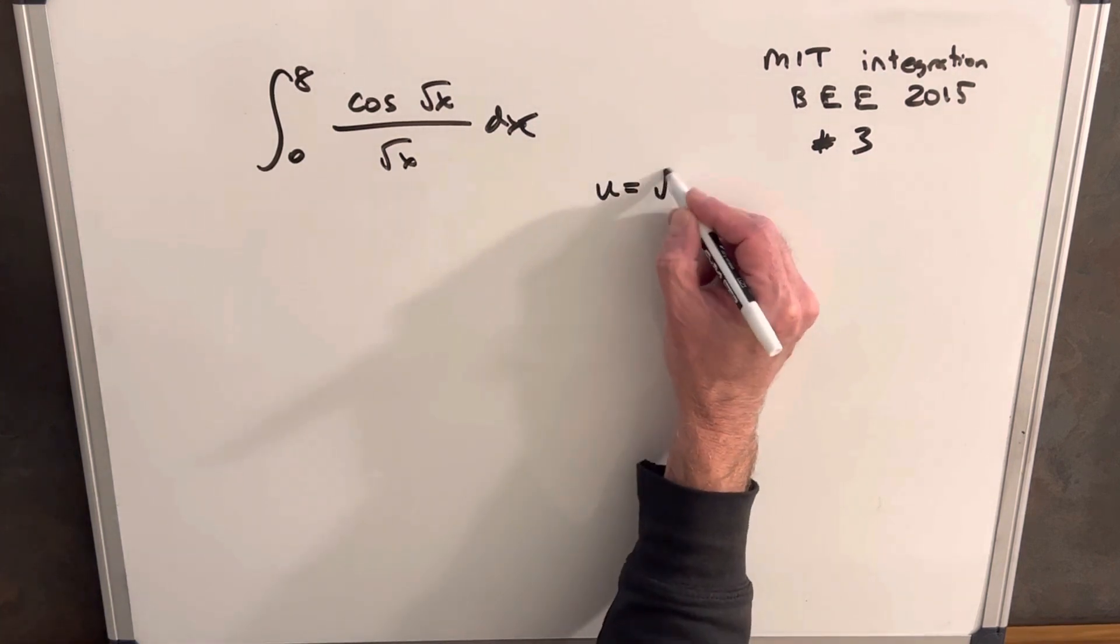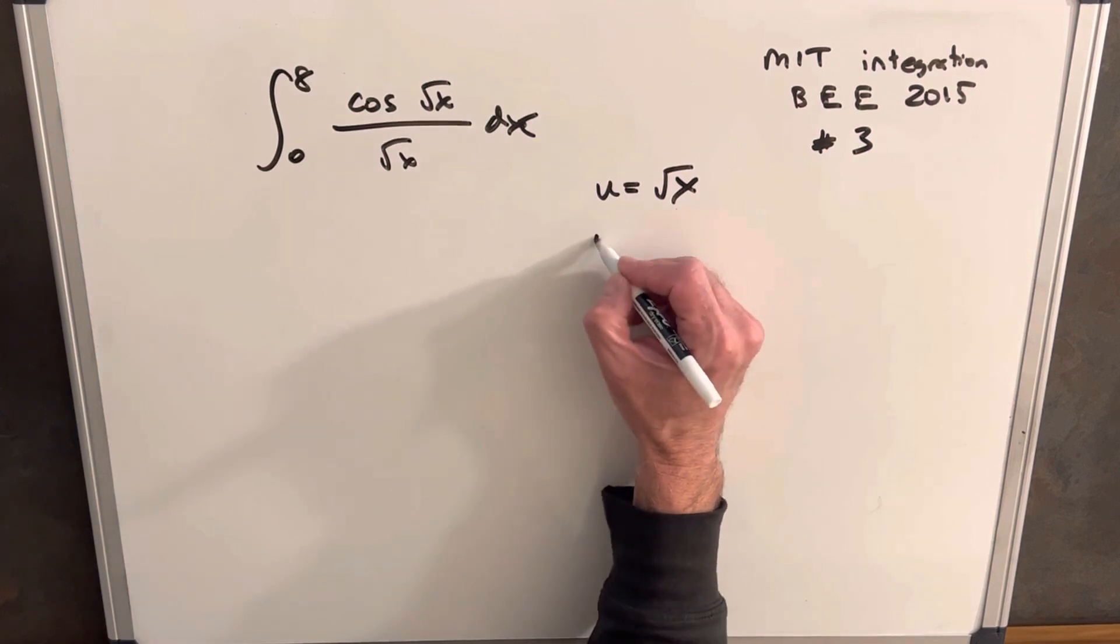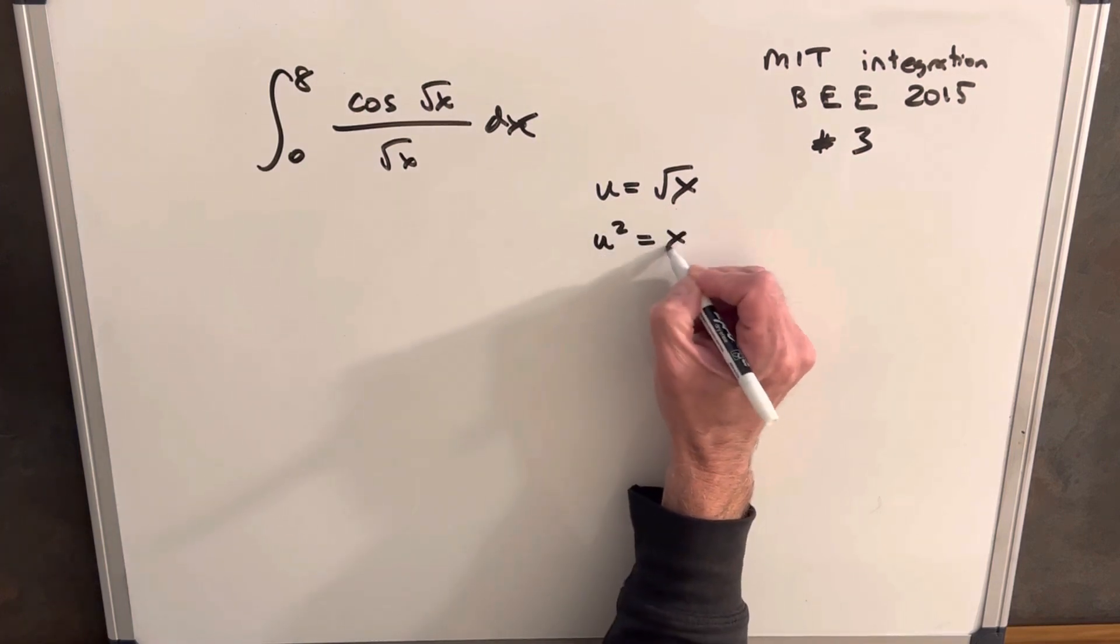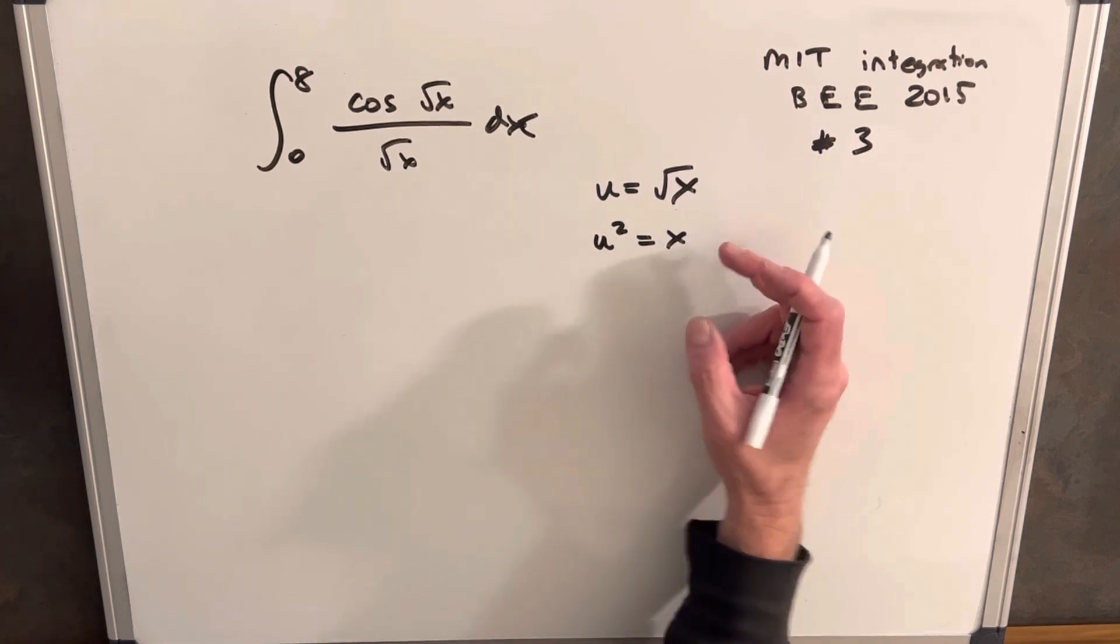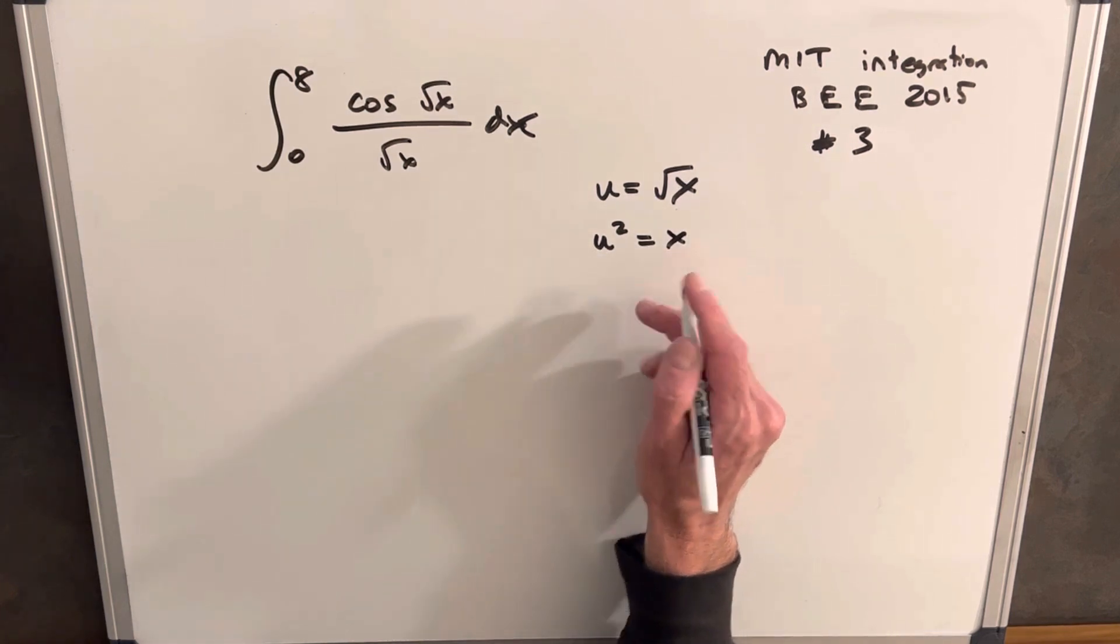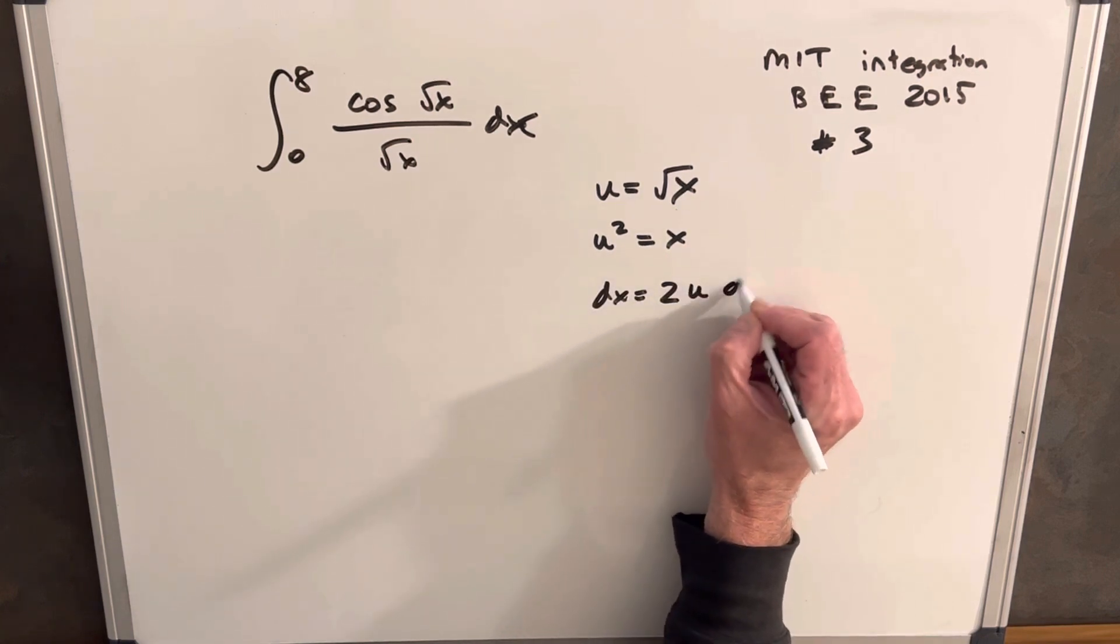So we'll call it u equal to square root x. I'll square both sides, so we'll say u squared equals x. It's going to make it easier to do this derivative. So we'll differentiate, we'll have dx equals 2u du.